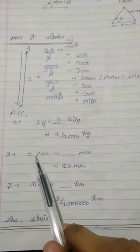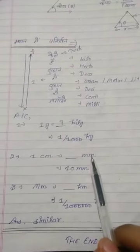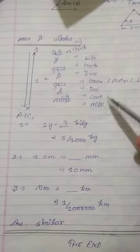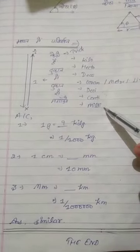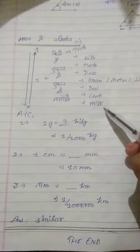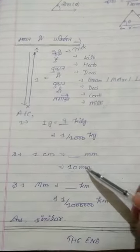Next question: 1 centi equals how many milli? 1 centi is here, milli is here. We multiply. 1 centi equals 10 milli.